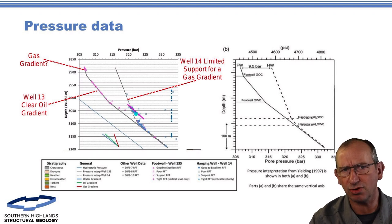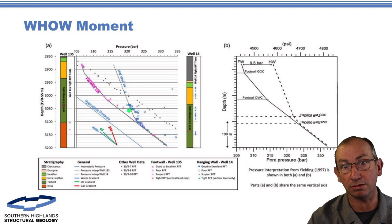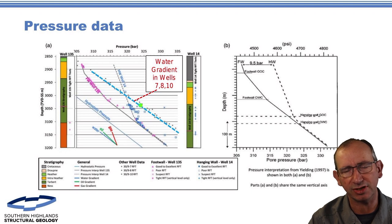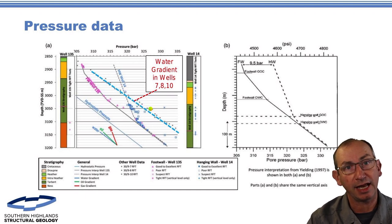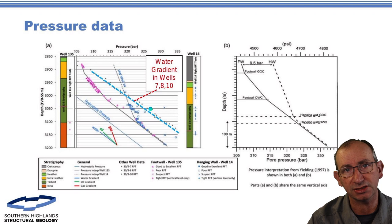One thing is certain: this is not one reservoir — it's a set of reservoirs. The key moment came when Bill plotted the water gradient for wells 7, 8, and 10, further to the east. They plot on yet another deeper, higher-pressure water line — another set of overpressured aquifers. It's really hard to have so many overpressured unless they are separate aquifers trapped in the shale and not dewatering. This isn't one aquifer across multiple sands. This Brent Delta is a stack of separate systems — not a set of sheet sands.